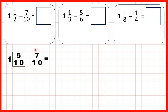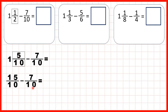But we need to subtract 7 tenths, and we only have 5 tenths in our mixed number. So we need to change this mixed number to an improper fraction. That's 15 tenths, because 1 times 10 is 10, plus 5 is 15, and the denominator stays the same. So now we can subtract 7 tenths. The denominator stays the same in our answer, and 15 minus 7 is 8, so our answer is 8 tenths.